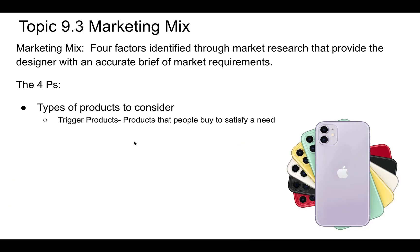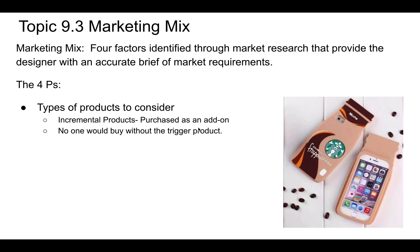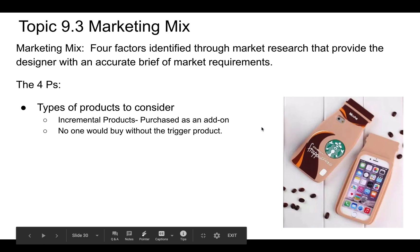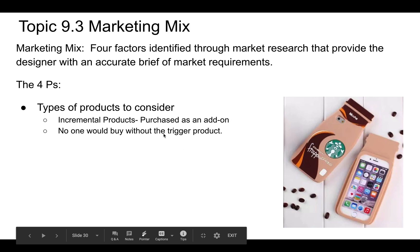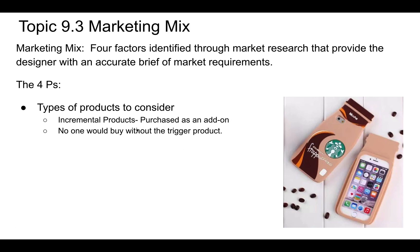Types of products to consider. One is called a trigger product — this is a product that somebody buys to satisfy a need. A classic example is something like a smartphone. This is different from what we call an incremental product, which are add-ons. An example would be a phone case for a cell phone. The thing about an incremental product is you would never buy it unless you actually had a cell phone — you would buy it because you had the cell phone, not the other way around. An incremental product is something that makes your trigger product better.